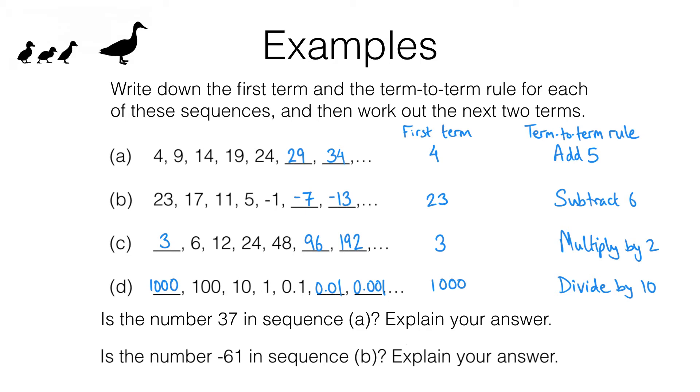Finally we've got these two extra questions down here. Let's focus on this one. Is the number 37 in sequence A? One way of doing this would be to continue the sequence. Remember the term-to-term rule is add 5, so the next term in the sequence would be 39 and you can see that we've gone from 34 to 39 and we've passed over 37. We also know that this sequence is increasing because we keep adding 5, so we're never going to get to 37 in the future. So we could use that as an explanation for why 37 is not in the sequence. We go from 34 to 39 and the sequence increases thereafter.